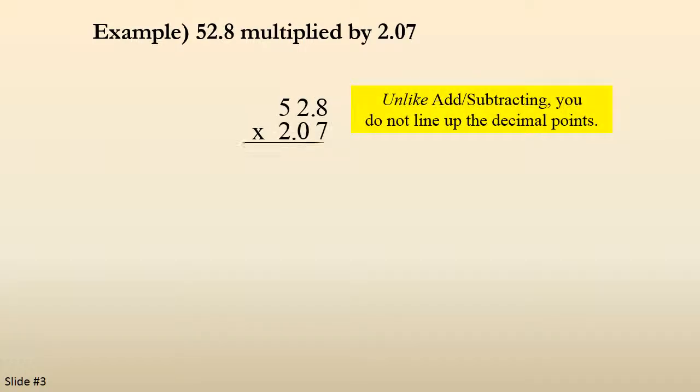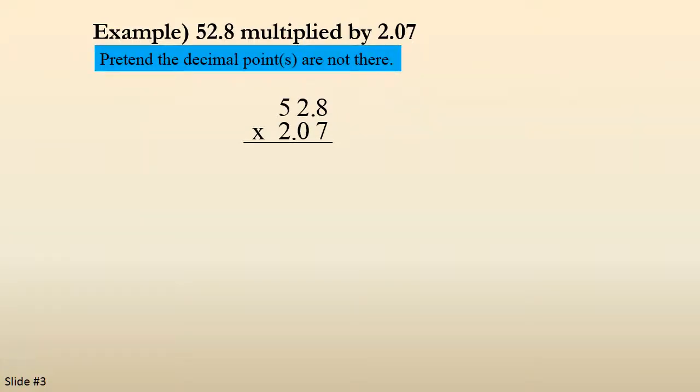Here's an example. 52.8 multiplied by 2.07. So we write it out. Now, unlike adding and subtracting, you do not line up the decimal points. Okay? You do not line up the decimal points when multiplying decimals.